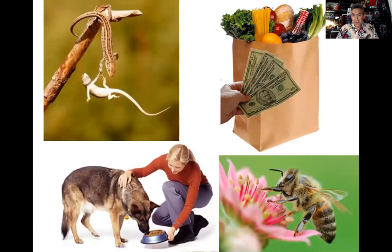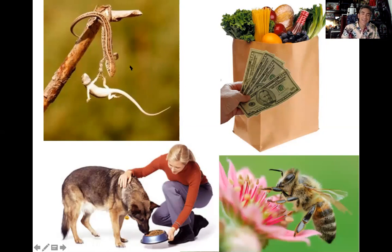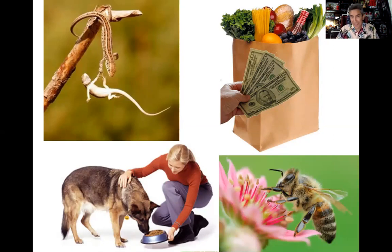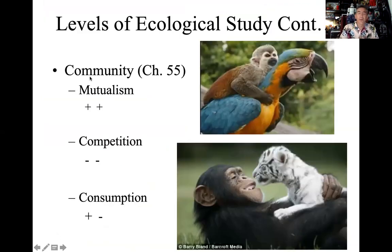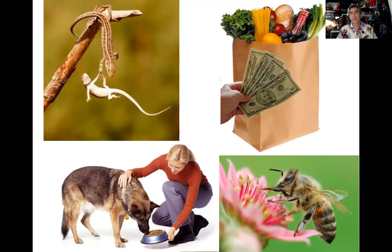I have a couple of pictures — a pet owner feeding her dog, a bee pollinating a flower, someone at a store exchanging cash for items, and a lizard scenario. I'm curious how you would critique these ecological interactions. I'm not going to give you the answer right now — I want you to think about it. This is something you'll have to do for your first exam: I'll give you a particular scenario and you justify it as a mutualism, competition, or consumption based on the static image at that moment.